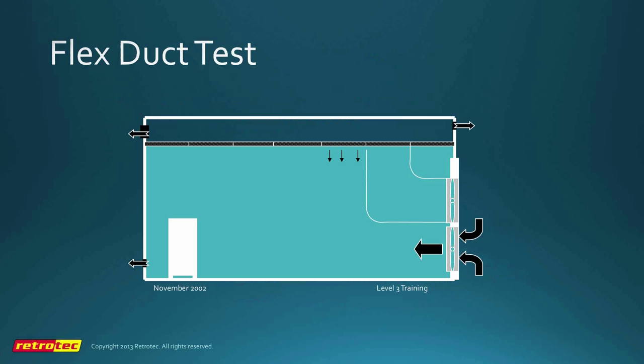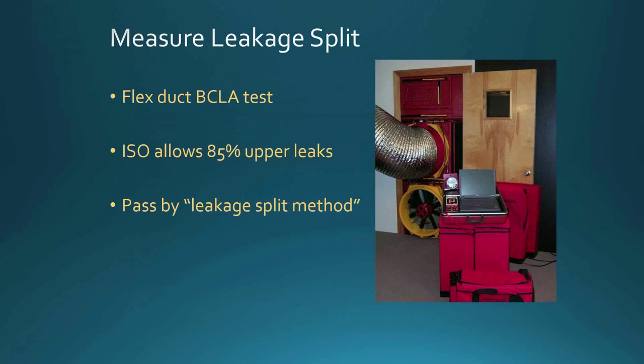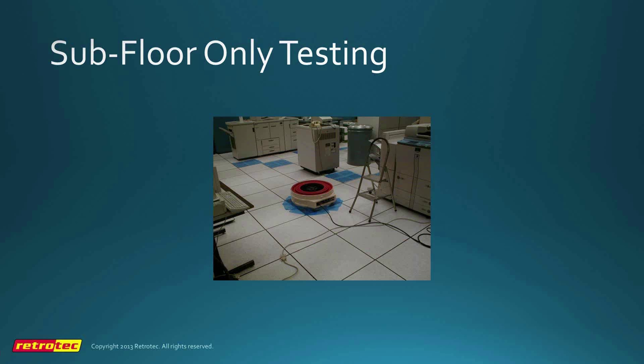The NFPA standard defines the BCLA or flex duct test as a specific test with exact instructions, whereas the ISO wording doesn't define it as specifically. At the last ISO committee meeting, I brought this up to encourage this technique as a legitimate measurement approach, as opposed to what currently happens in many cases where people simply say the lower leaks are 15% without bothering to measure them. This is one of our older systems running a leak split test — it's essentially like buying two separate systems combined, with the only extra piece being the flex duct to connect to the above-ceiling space. Obviously this doesn't work if there is no suspended ceiling, but nearly all computer rooms have suspended ceilings. A derivation of this is the subfloor-only test, which neutralizes pressure across a raised floor.